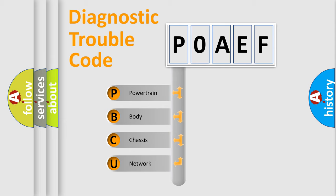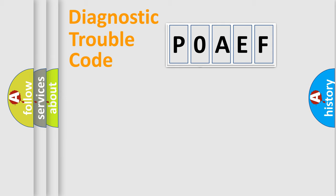We divide the electric system of automobile into four basic units: Powertrain, Body, Chassis, and Network. This distribution is defined in the first character code.